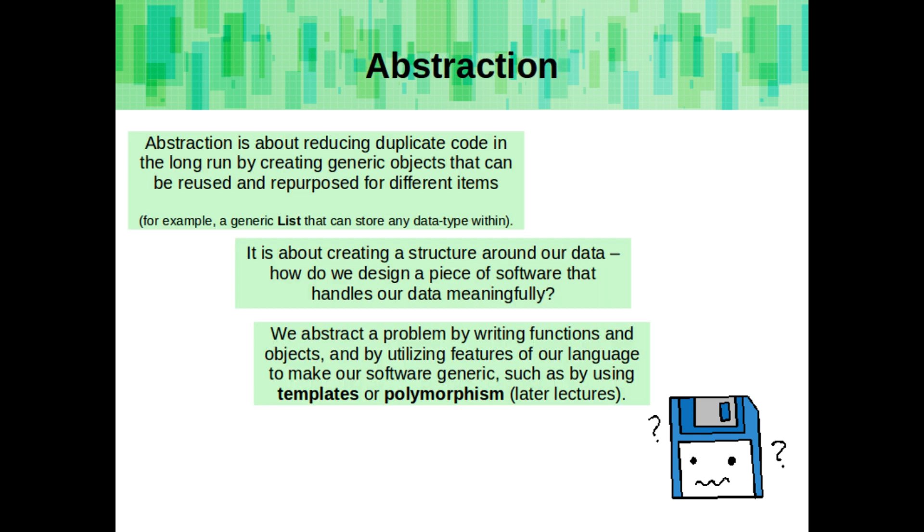Abstraction is about reducing duplicate code in the long run by creating generic objects that can be reused and repurposed for different items. For example, a generic list that can store any data type within.